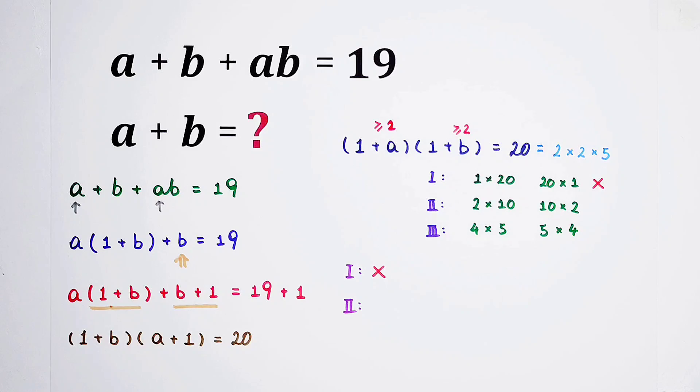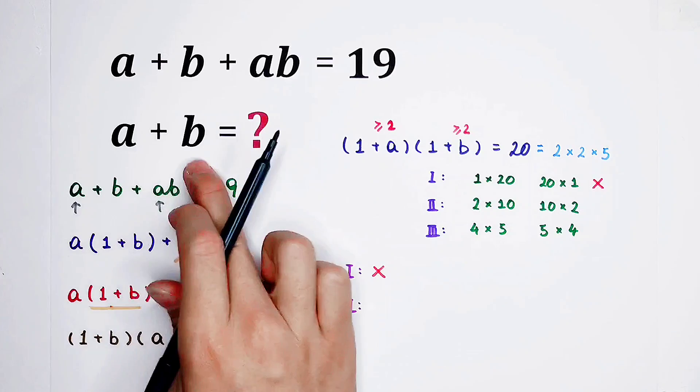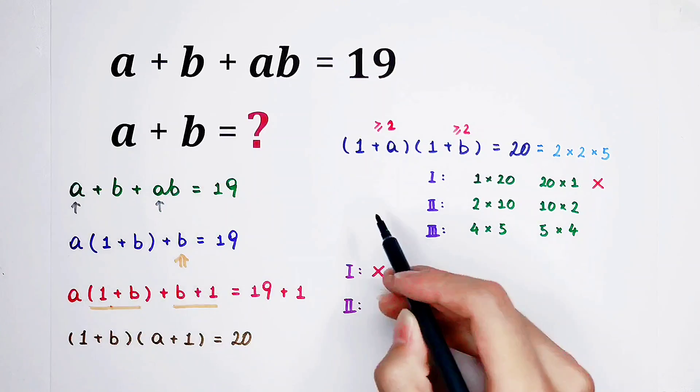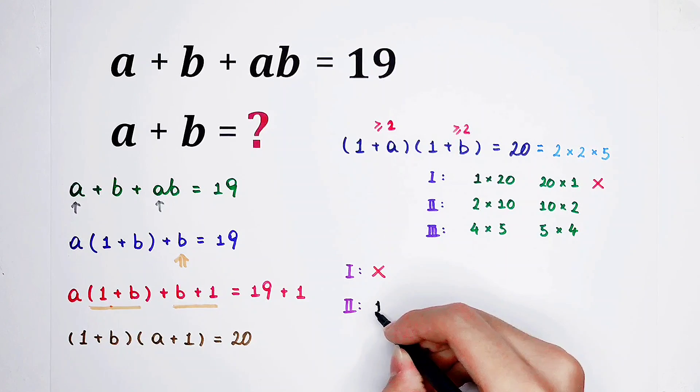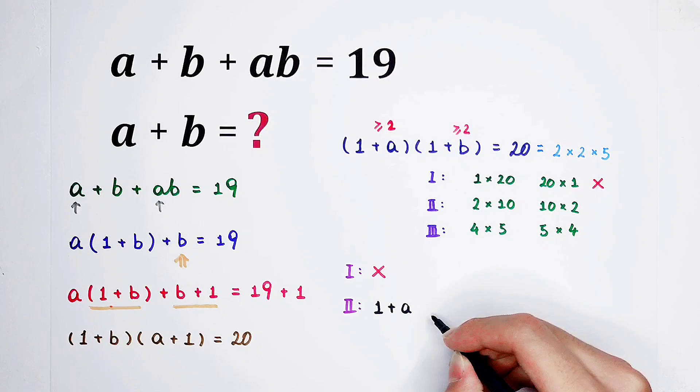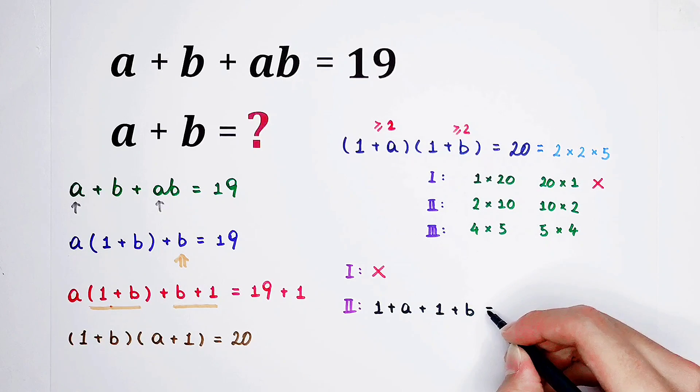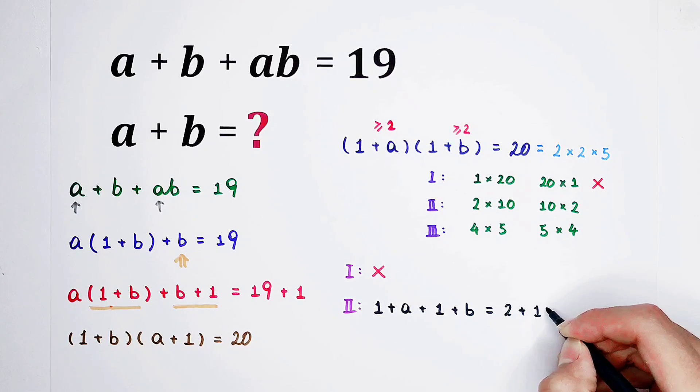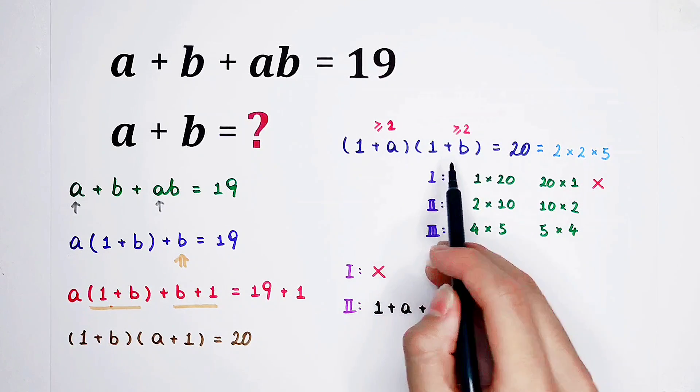Our second group. If we know the value of 1 plus A and 1 plus B, we can solve A plus B easily. For our second group, 1 plus A plus 1 plus B equals 2 plus 10. Of course, 2 plus 10 is equal to 10 plus 2. They're the same thing. In our second case, the sum of 1 plus A and 1 plus B is 12.